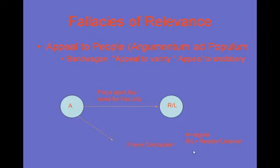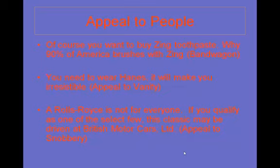The next set of fallacies are called appeal to people, argumentum ad populum, and there are three types: the bandwagon, an appeal to vanity, and an appeal to snobbery. An arguer will play upon the insecurity of the listener and pose a conclusion. Example of bandwagon: 'Of course you want to buy Zing toothpaste. Why, 90% of America brushes with Zing.' The arguer is telling you to jump on the bandwagon — everybody's doing it, that's why you should too. But this is no real reason to accept the conclusion.